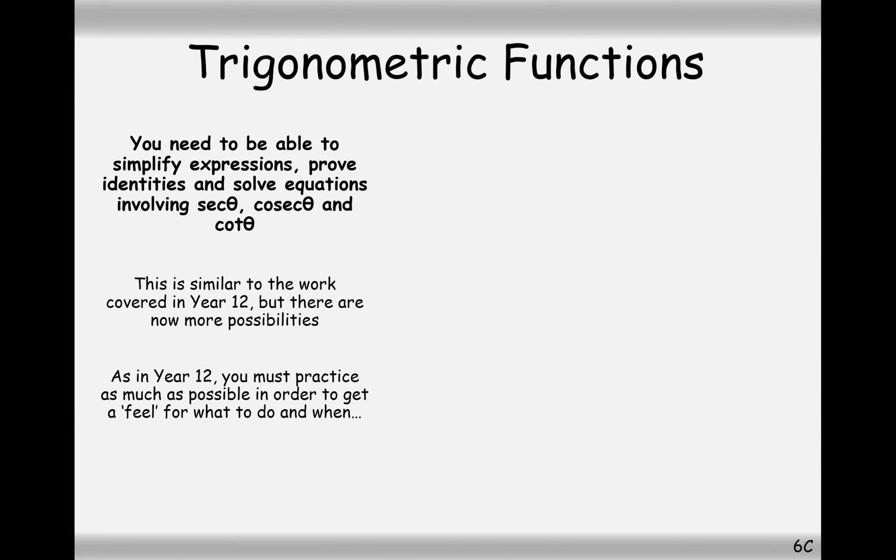This is very similar to the topic that we saw in year 12 where we were solving trig equations, maybe rearranging trig identities as well. But in this case here we've got three more trig functions that we need to rearrange. My advice would always be with sec, cosec, and cot, just change them using their identities into terms of sine and cos, and then effectively you're only rearranging two trig functions.